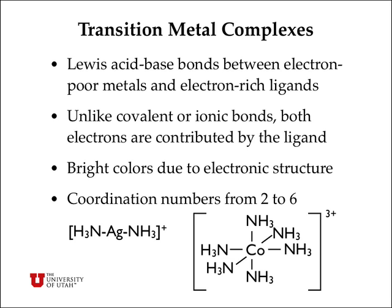Transition metal complexes are formed by Lewis acid-base bonds between the electron-poor metals and the electron-rich ligands. The electron-poor metals are electron acceptors, or Lewis acids. The ligands are electron-rich and are the electron donors, or Lewis bases. Unlike covalent or ionic bonds, both electrons in these bonds are contributed by the ligand — it's a donor-acceptor interaction. Many transition metal complexes have bright colors due to low-lying electronic states, so we'll talk a little bit about electronic structure.